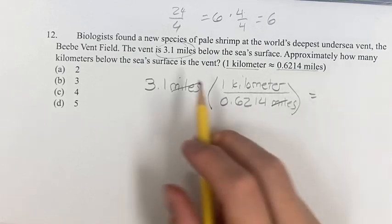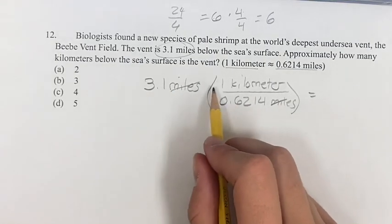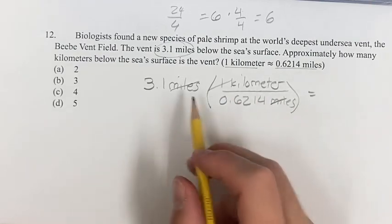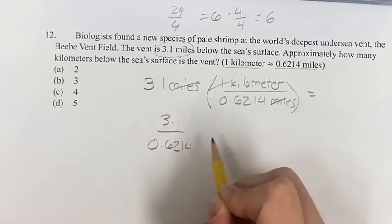So the miles cancel, and we get 3.1 divided by 0.6214 times 1, but we can basically just ignore that. And this is not in miles anymore, it's in kilometers.